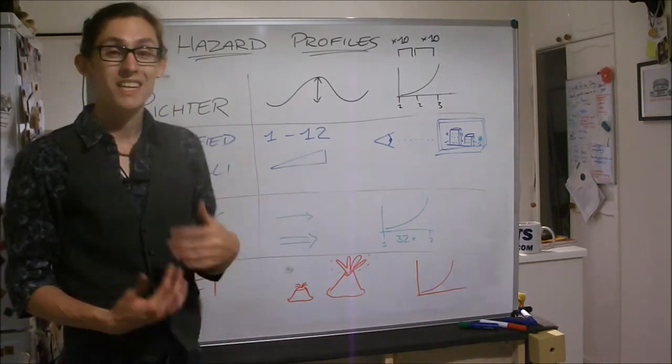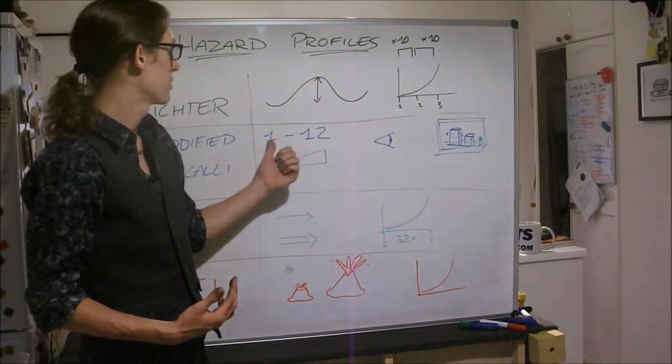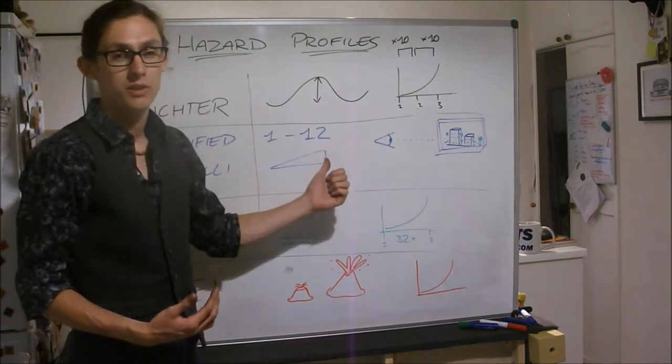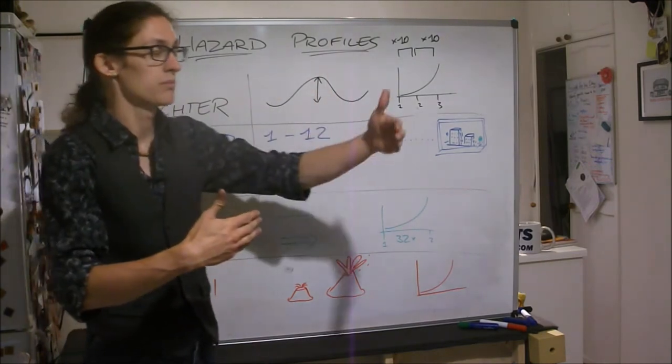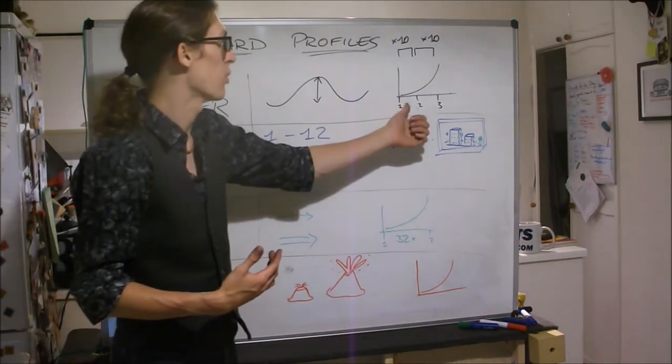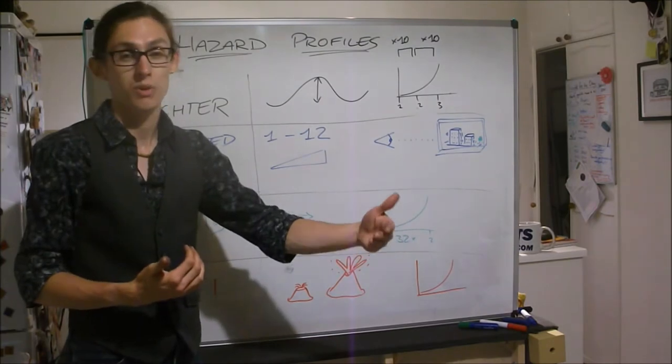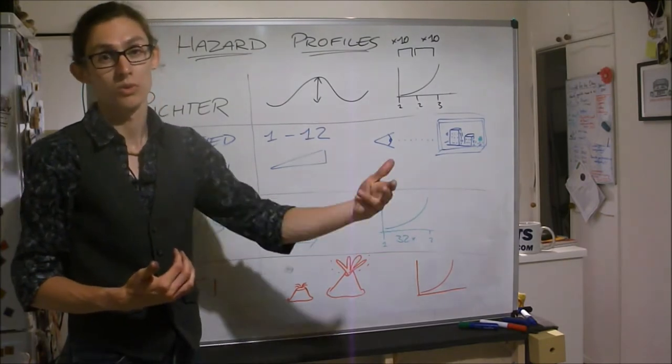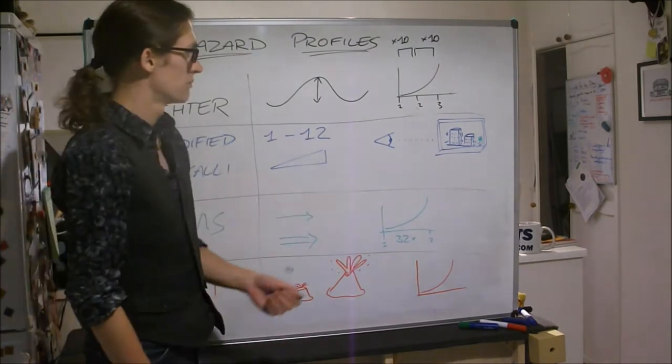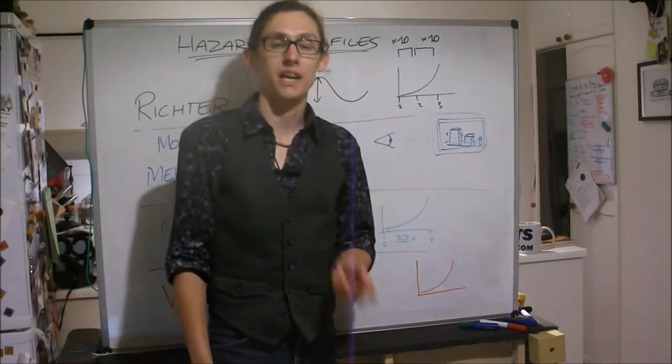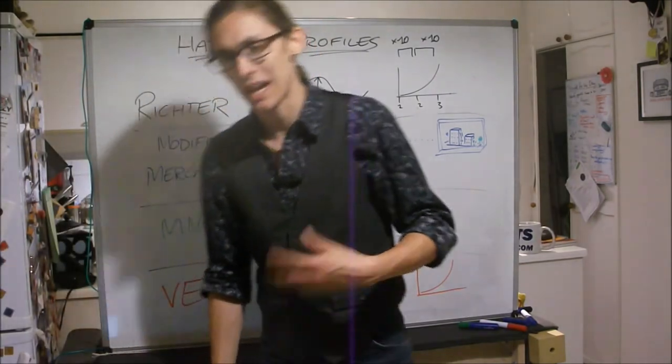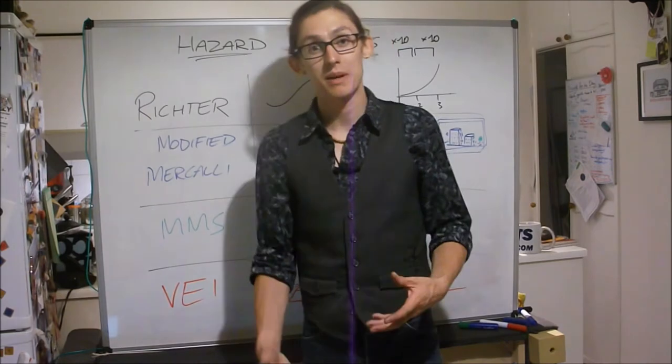It's one to twelve. It's a linear scale, so one, two, three, you're sort of going up in a line. You're not going up by one, ten, hundred. You're going two is twice as big as one, four is twice as big as two. However, it's subjective, so it has its problems. It's not mathematical.